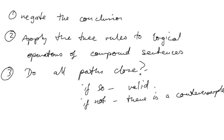Very roughly: we negate the conclusion, list all the premises and the negation of the conclusion as lines on a single path, then apply the tree rules to all the logical operators in the compound sentences. We resolve the entire set of compound sentences into paths containing their basic constituents. Then we check whether the paths close — close means there's a contradiction. If they do close, the argument is valid. If not, then there's a counterexample.